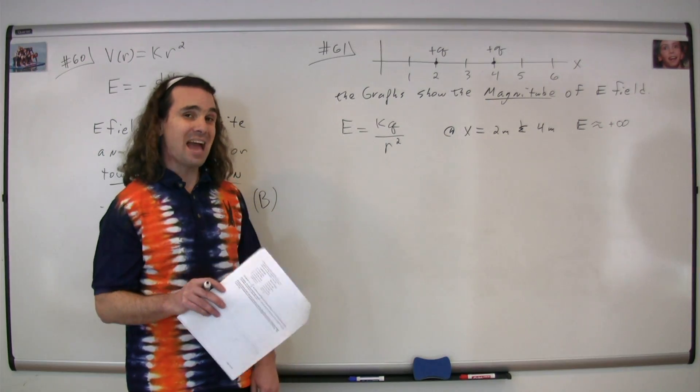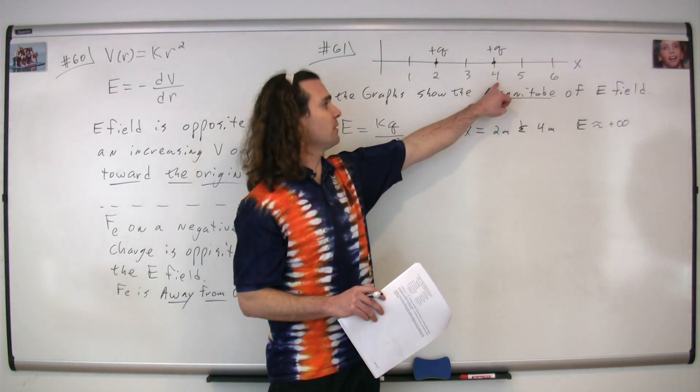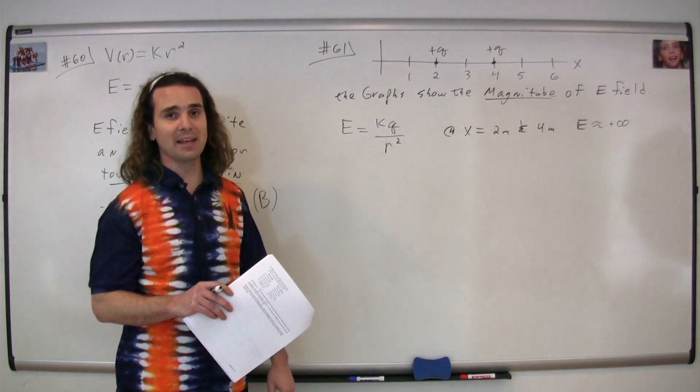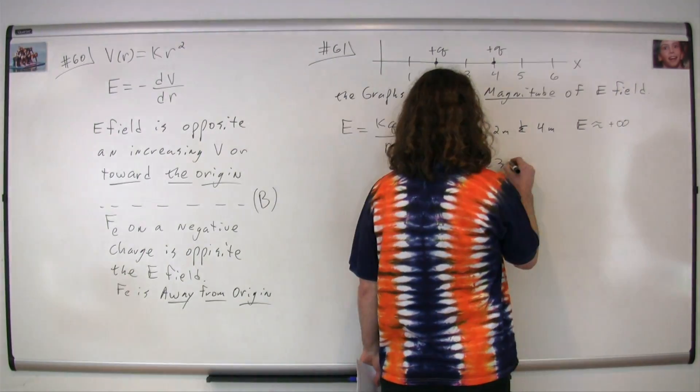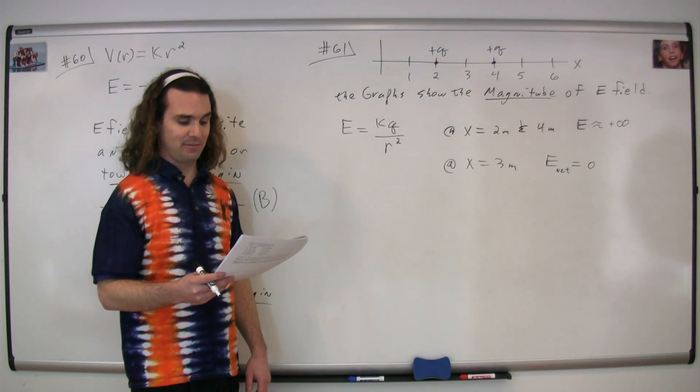In addition, the net electric field at three meters should be zero because the electric fields caused by the charges at two and four should be equal and opposite and cancel one another out. There's only one graph that matches those criteria, and that is graph A.